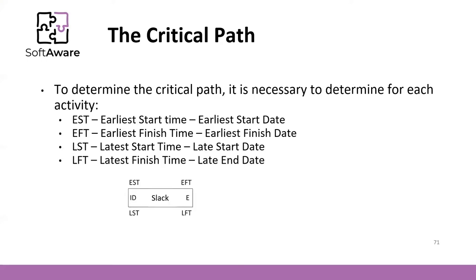Just to recap: when we have a precedence diagram, we have the ID of the task, the estimation of the duration, the earliest start time, the earliest finish time, the latest start time, the latest finish time, and the slack.